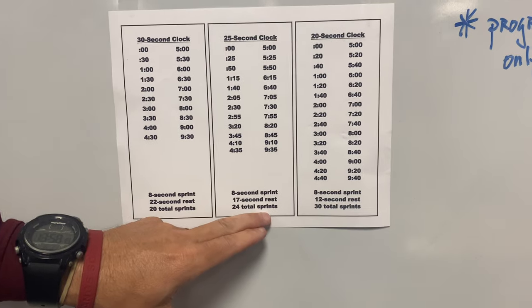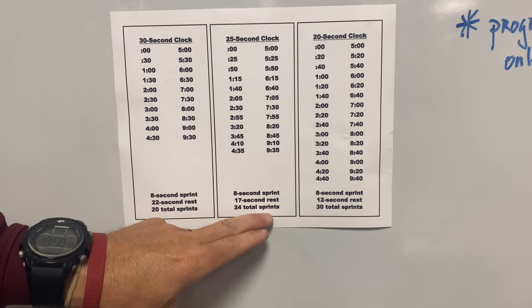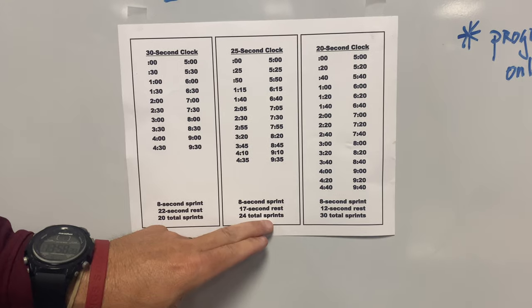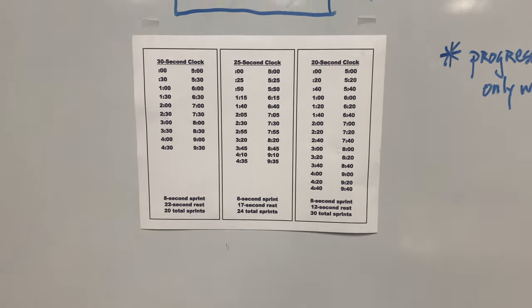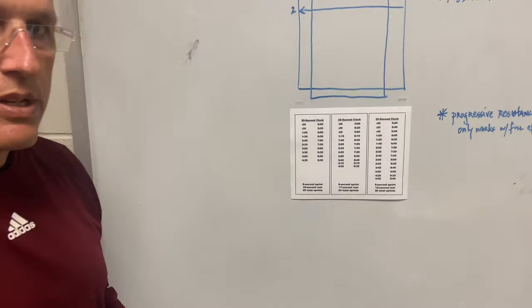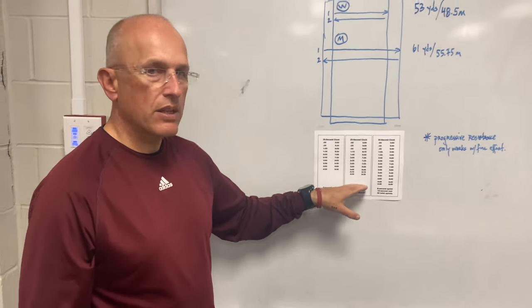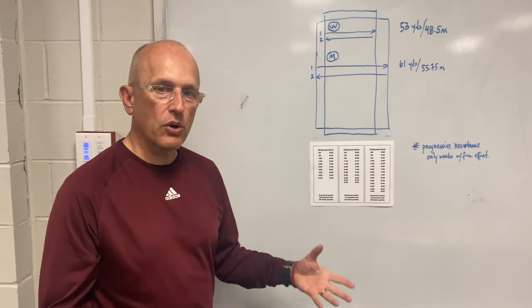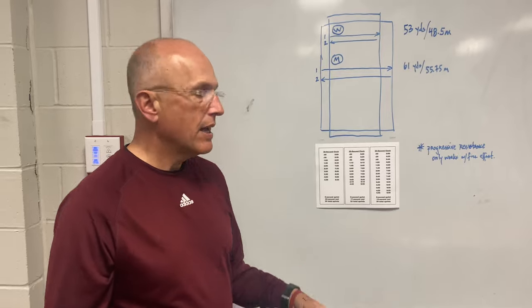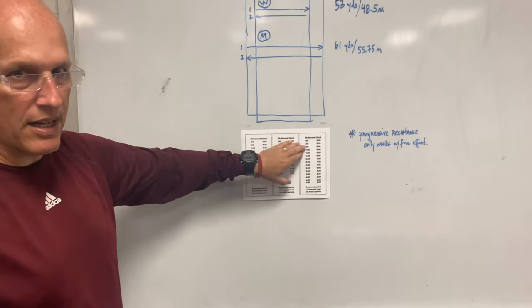If you can do it on a 25 second clock, you've now graduated to being able to do 24 sprints in those 10 minutes. So essentially, we're not adding work. We're just getting more efficient at doing the work in the same amount of time. You're going to recover quicker. You're going to be more fit.